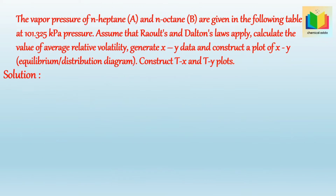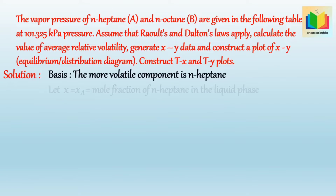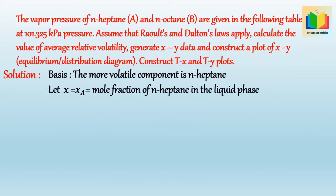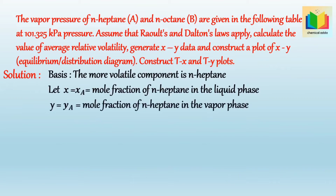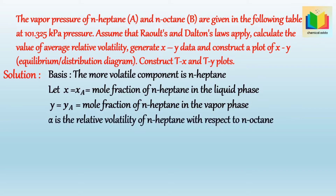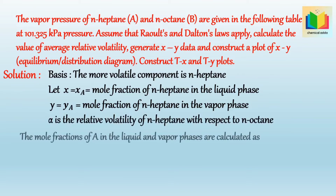Let the more volatile component be N-heptane. X equals X_A, the mole fraction of N-heptane in the liquid phase. Y equals Y_A, the mole fraction of N-heptane in the vapor phase. Alpha is the relative volatility of N-heptane with respect to N-octane. By using Dalton's law and Raoult's law, we get an equation for the mole fraction of component A — heptane — in the liquid and vapor phases.